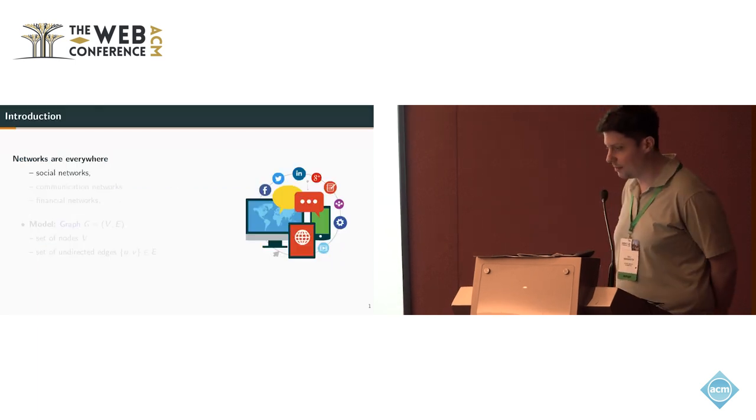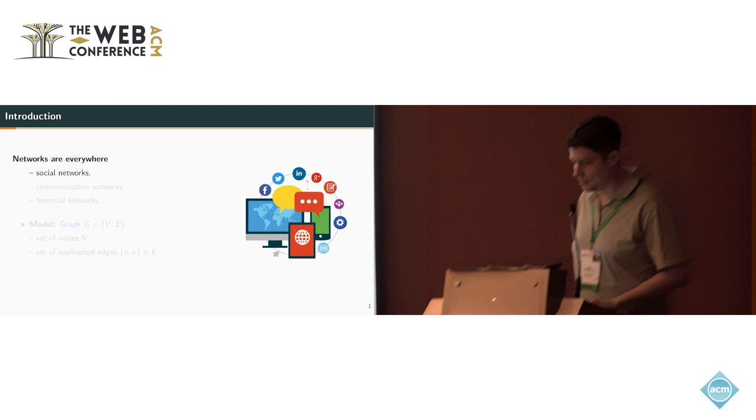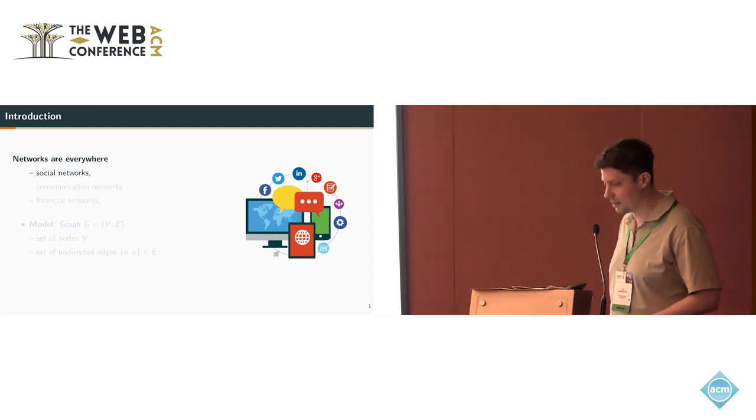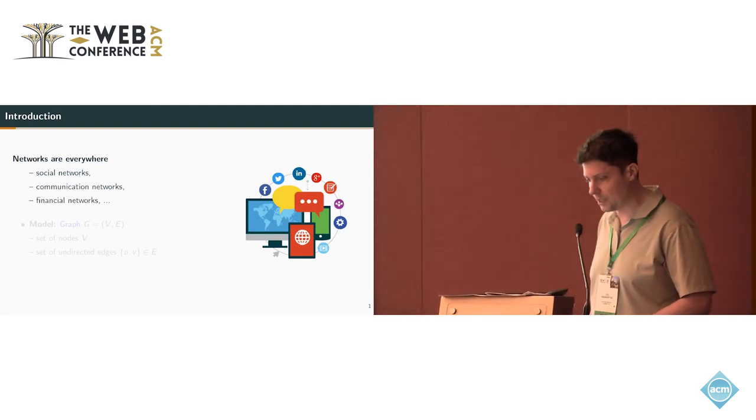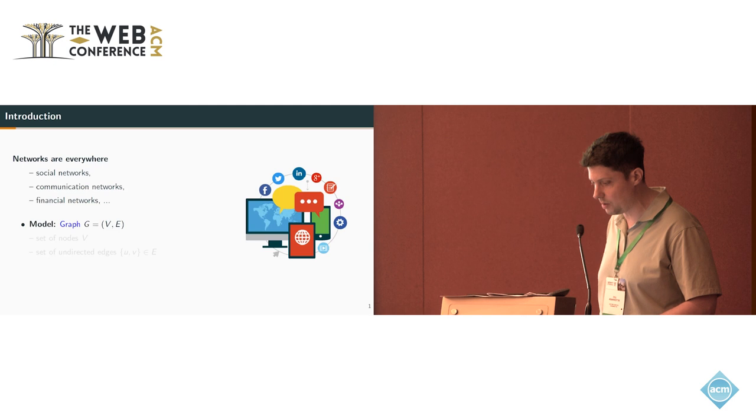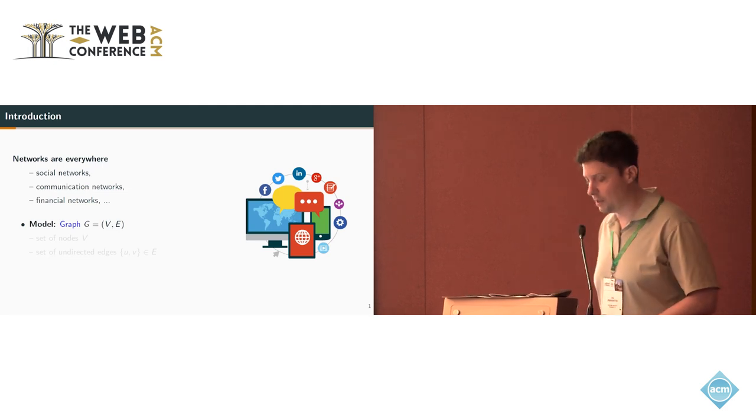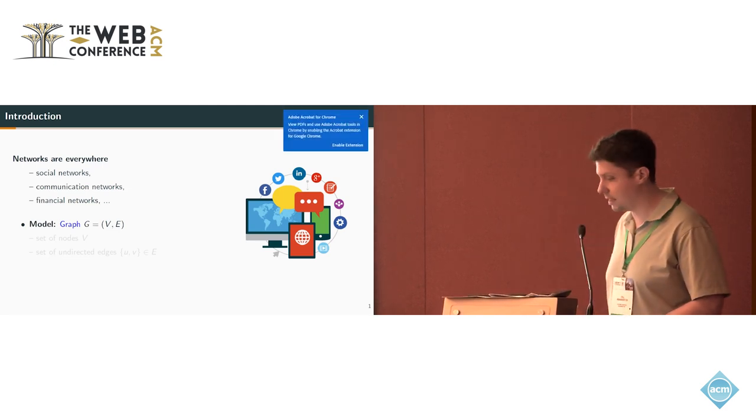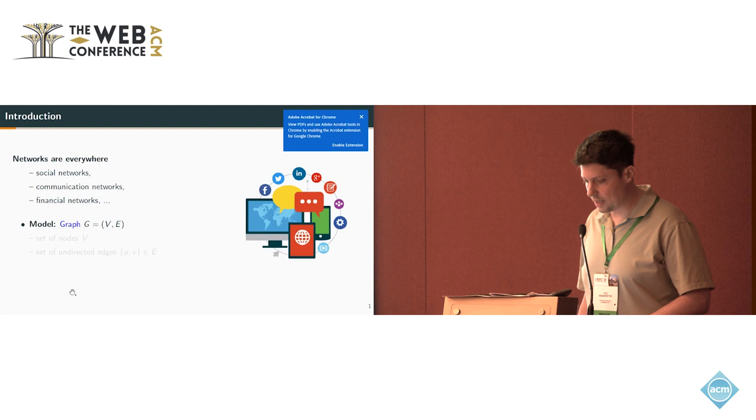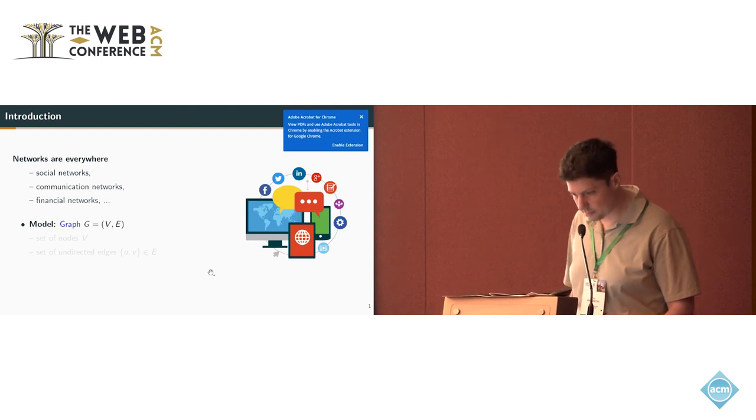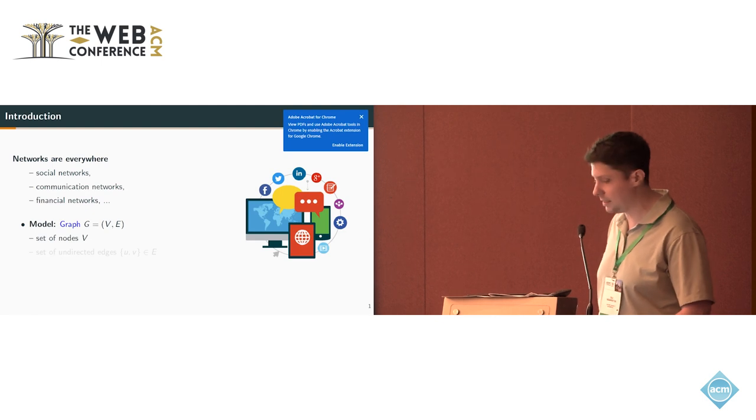I'll go briefly through the introduction. Networks are everywhere - we've seen this already several times - social networks, communication networks, financial networks, and so on. We use the standard model of undirected graphs where we have a set of nodes representing the entities and a set of undirected edges connecting these nodes and representing relationships.